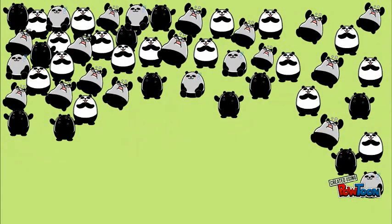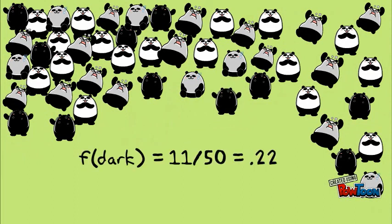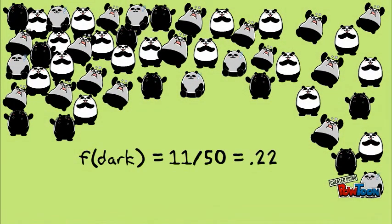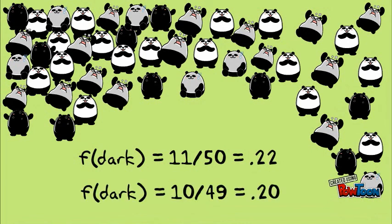Let's suppose we have a larger population of 50 pandas. In this population, our frequency of dark pandas is .22. Let's suppose that a meteor comes in, strikes at random, and just by chance happens to take out one of our dark pandas. Now the frequency of the dark panda is .2. Our population has evolved.